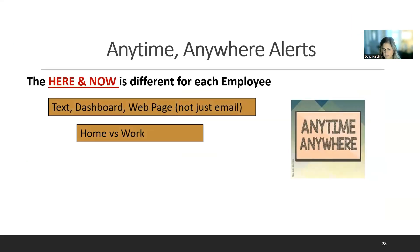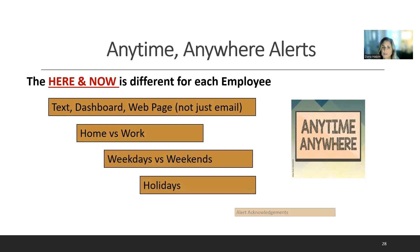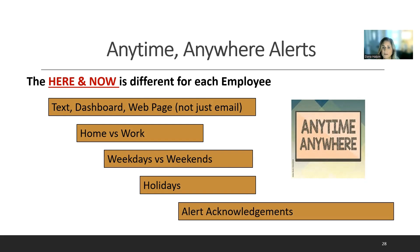Anytime, anywhere alerts recognize that the 'here and now' is different for each employee. You can alert people by text message, a dashboard, or a web page — not just email. They can have different email addresses, home versus work. You can specify weekdays versus weekends and holidays. Not every person has the same location, device, or work hours. Sage Alerts and Workflow is very flexible when it comes to schedules, subscribers, and delivery preferences.